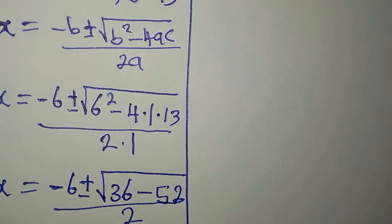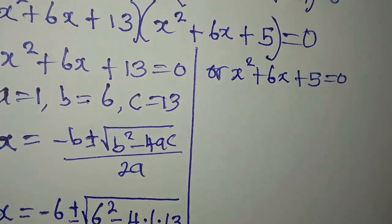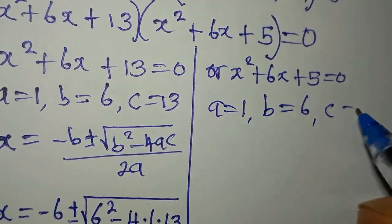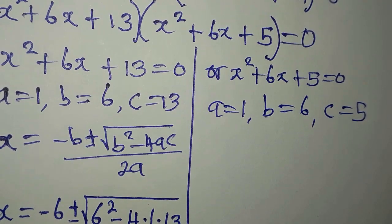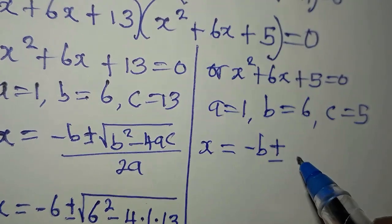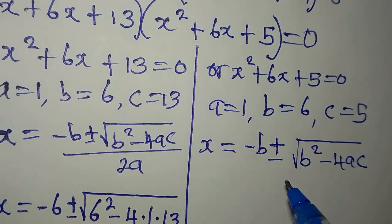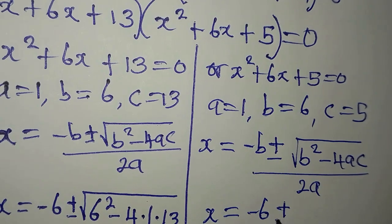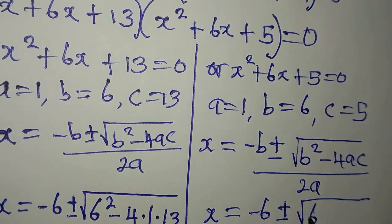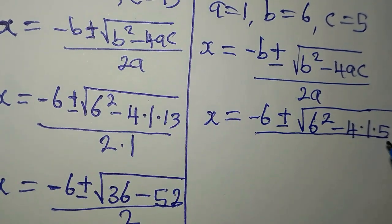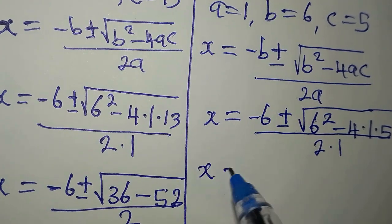Now let's go back to the other equation — the second quadratic equation. Here our a is 1, our b is 6, and our c is 5. The only difference from before is that c is now 5 instead of 13. Now x is equal to minus b plus or minus square root of b squared minus 4ac, divided by 2 times a. So x is equal to minus 6 plus or minus square root of 6 squared minus 4 times 1 times 5, divided by 2 times 1.